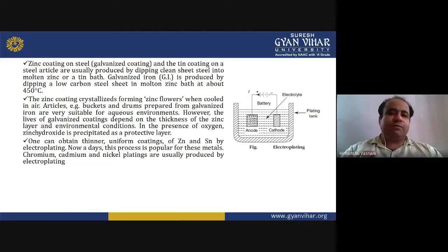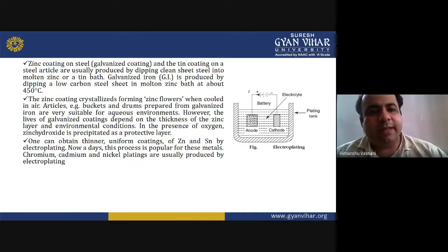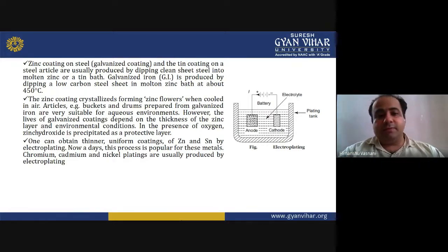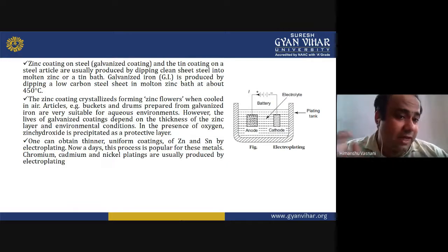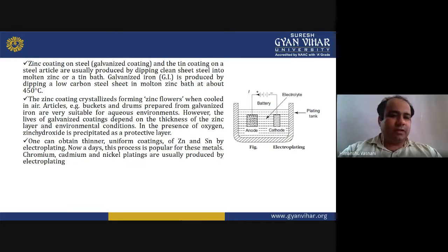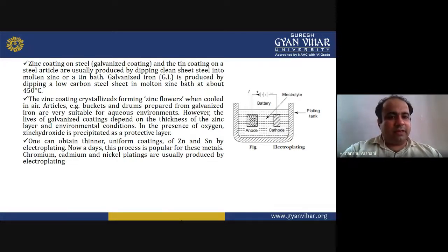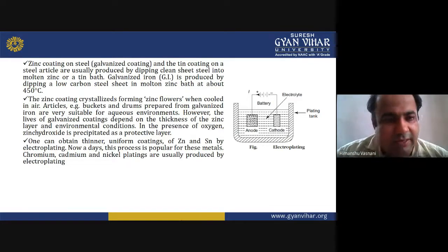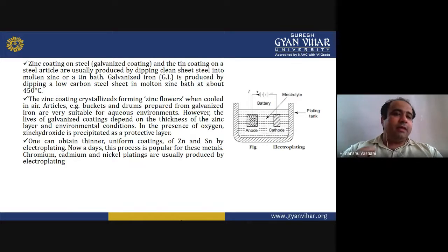In coating, the surface forms zinc flowers when cooled in air. Articles such as buckets and drums prepared from galvanized iron are very suitable for aqueous environments. The life of the galvanized coating depends on the thickness of the zinc layer and the environmental conditions. In the presence of oxygen, zinc hydroxide is precipitated as a protective layer.